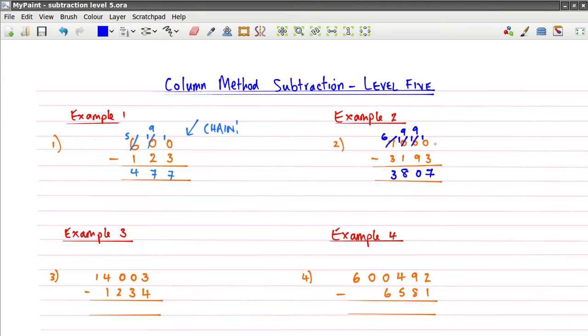And so level 5, remember, is all about being able to set up your chain of carries or your chain of borrows or your chain of compensations, whatever you want to call it. You're going to have to set up a chain on these.